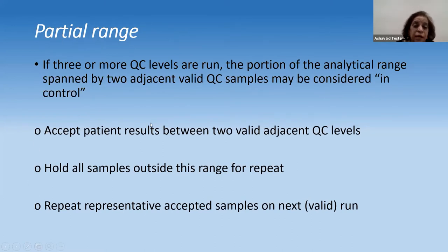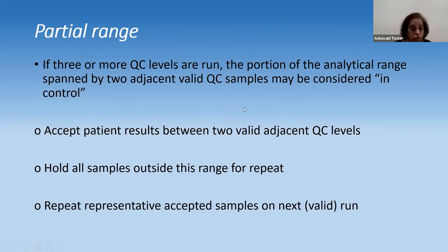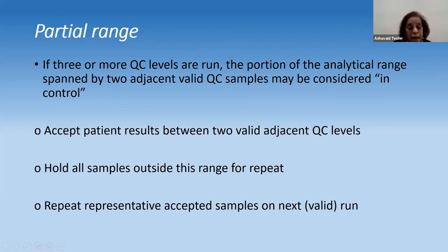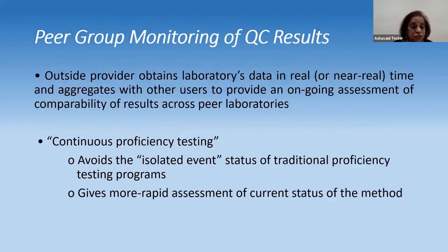If you run three control levels of QC, the portion of the analytical range spanned between two adjacent valid QC samples is considered in control. Accept patient results between these two adjacent QC results. If something goes beyond your quality control ranges, hold that sample, dilute if needed, repeat it, and repeat representative accepted samples on the next run.